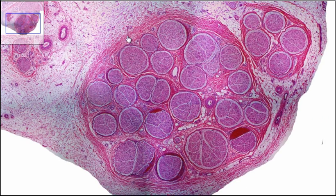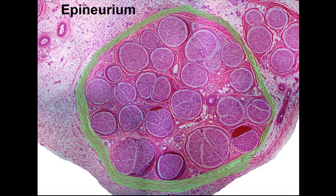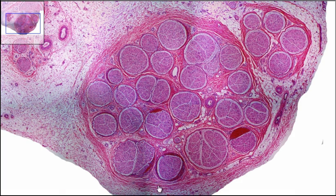This outside is called the epineurium. This is a connective tissue that runs around the outside of the nerve. It kind of bundles everything together.